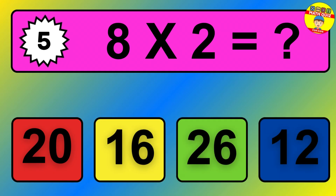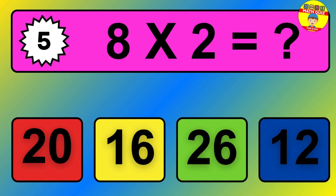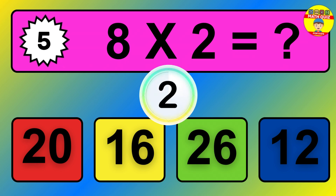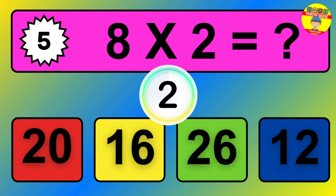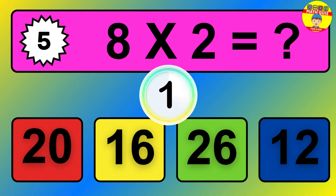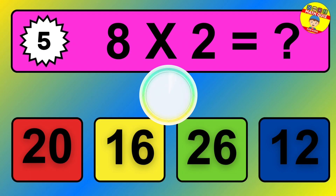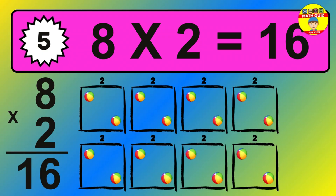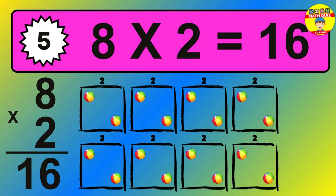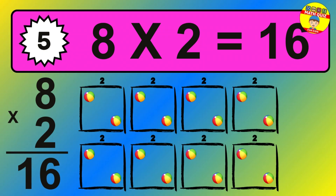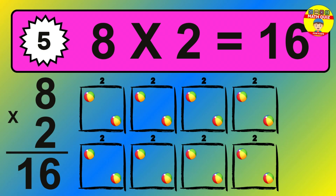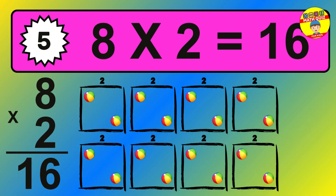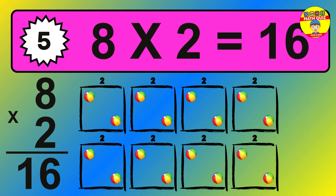Question 5. 8 times 2 equals what? The answer is 8 times 2 is 16. To calculate, we have 8 groups with 2 balls each one. So how many balls do we have? 16 balls.